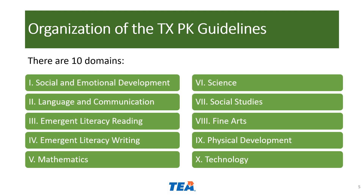Here are the 10 domains in the Pre-K Guidelines. Each domain is indicated with Roman numerals. One, social and emotional development. Two, language and communication. Three, emergent literacy reading. Four, emergent literacy writing. Five, mathematics. Six, science. Seven, social studies. Eight, fine arts. Nine, physical development. And ten, technology.